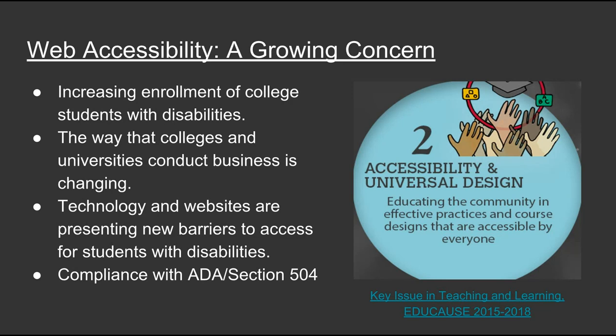The way we're conducting business in our living and learning environments is changing. We're increasingly digital, we use more technology, and our students expect it. With the increase of students with disabilities and the increasing use of web and technologies, we're more aware of accessibility and its impact. Technology has opened doors for people with disabilities, but technology can be a barrier or the solution, depending on design. Poor design can exclude users from equal opportunities to access campus programs, services, and activities. This is, at its core, an equity issue, because there are retention and completion gaps for students with disabilities.